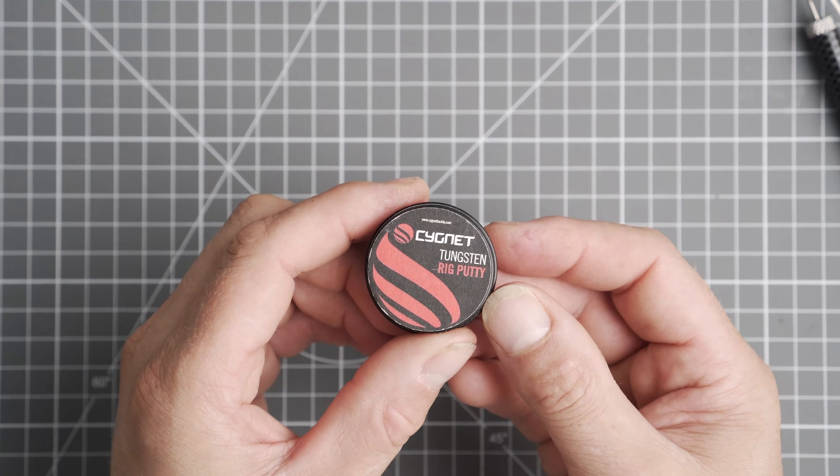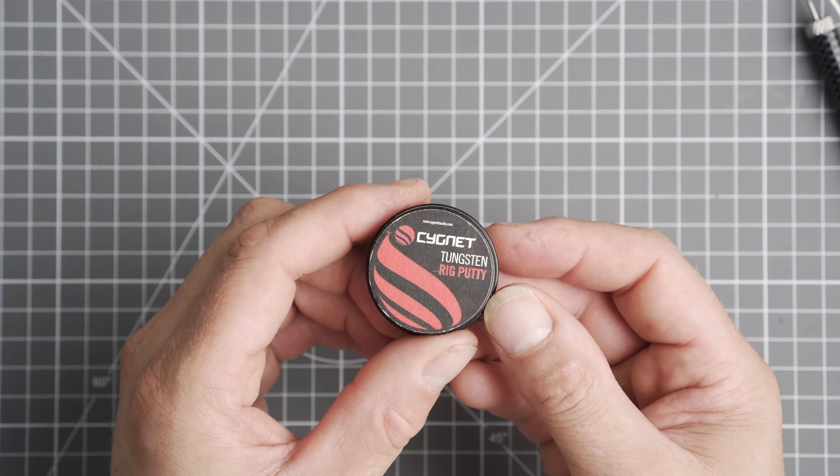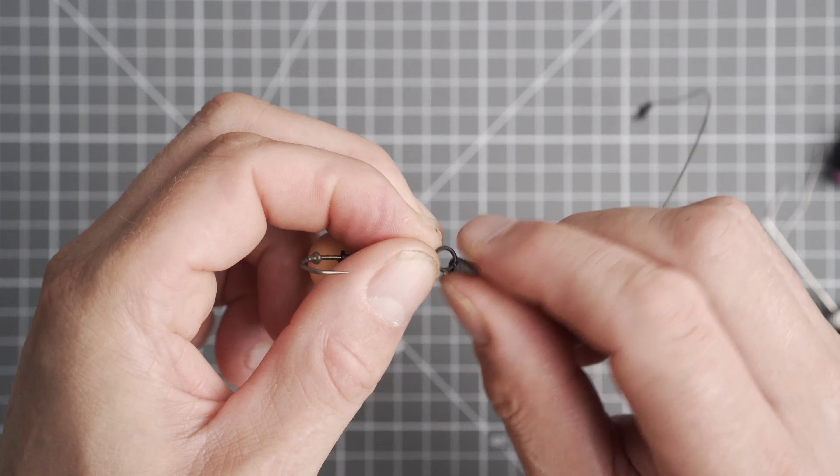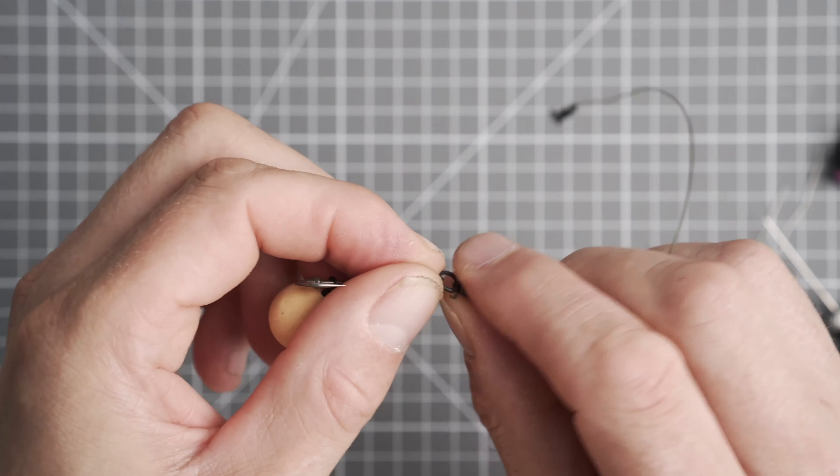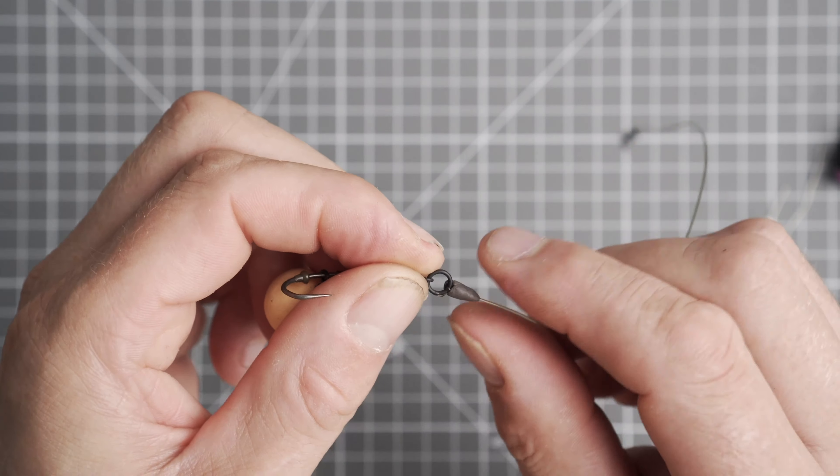Now to balance the rig I'm using the Signet tungsten putty and I'm just going to put a little tiny bit of this onto the knot of this stiff mono where it attaches to the ring of the Ronnie swivel.